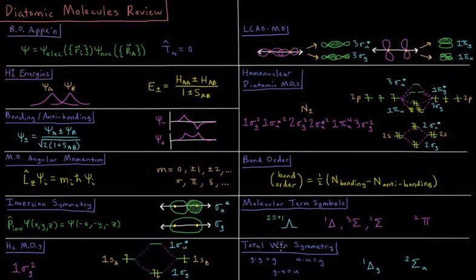Adding in on top of that the total wave function symmetry in terms of gerade or ungerade, we get complete homonuclear diatomic term symbols like singlet delta g or doublet sigma u.